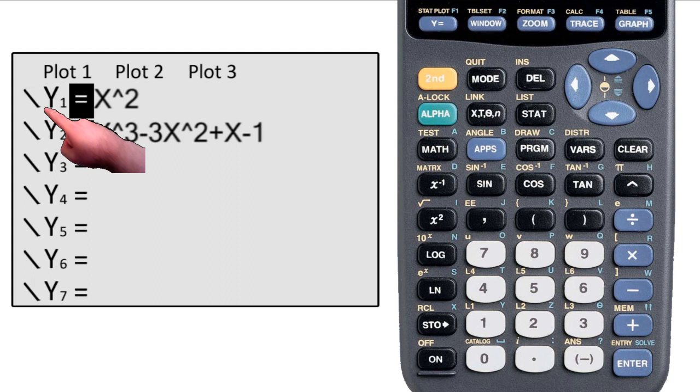Now I can also go to the left of the equal sign to the line before the Y. If I hit enter here, I can cycle through different ways it will graph the function. Like I can change it to a thick line and this function will be graphed on a thick line.